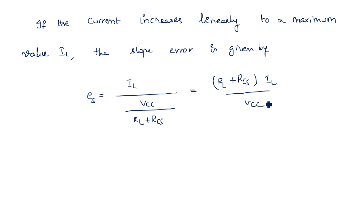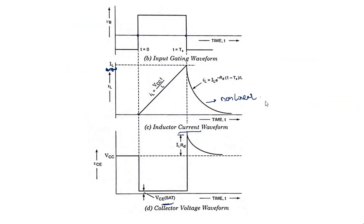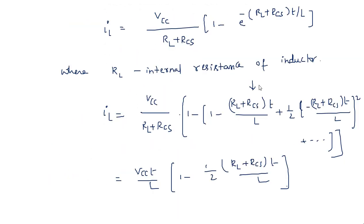The inductor current waveform and the waveform at the collector of the transistor have now been described. To maintain linearity, the voltage across the total circuit resistance — (RL + RCS)·IL — must be kept small compared to the supply voltage VCC.